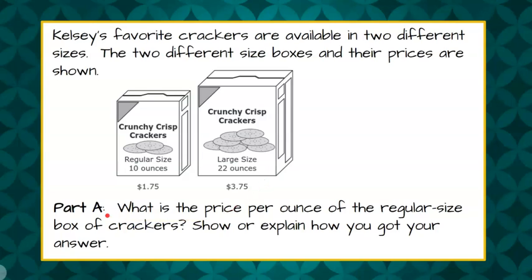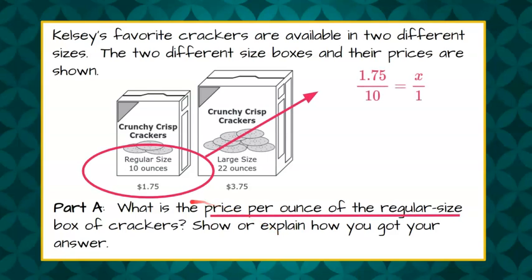Part A of this open response question, we are asked: what is the price per ounce of the regular size box of crackers? Show or explain how you got your answer. So we know that our regular size has 10 ounces in it for $1.75. Our ratio is $1.75 for 10 ounces, and we want to know the dollars for one ounce — this would be our unit rate, dollars per ounce.